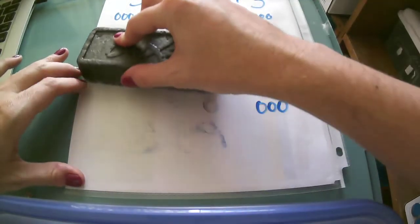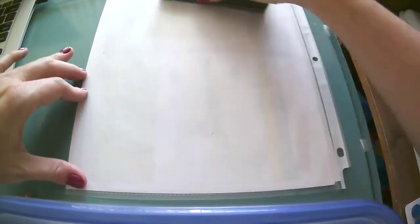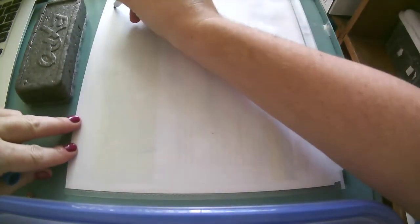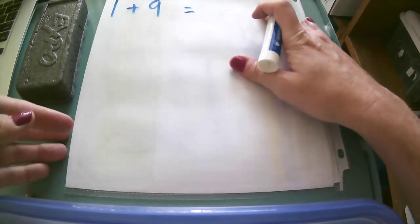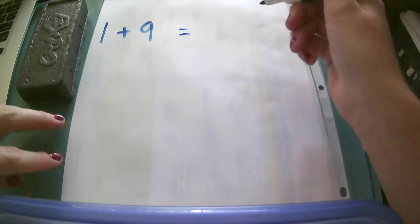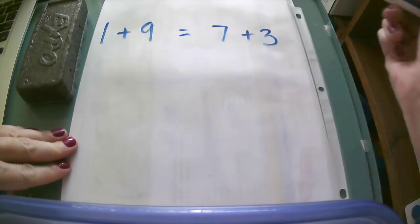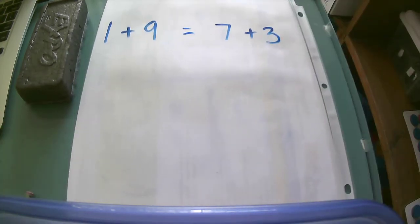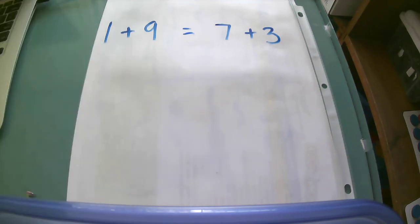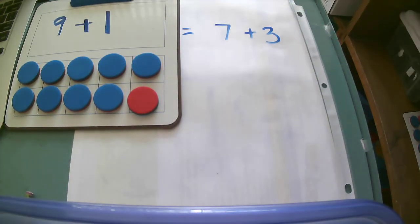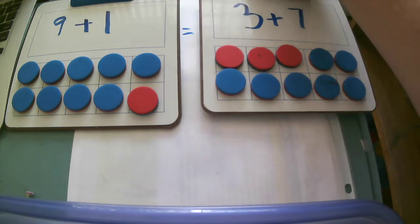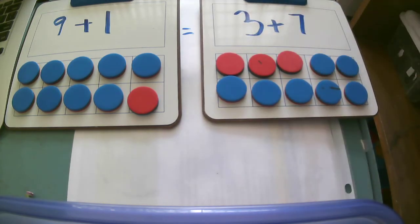Let's look at one more problem and we're going to try to see if they are equal. Let's do 1 plus 9 and 7 plus 3. I'm going to take a look at some 10 frames on this. I have 1 plus 9 and then I have my 3 and my 7.